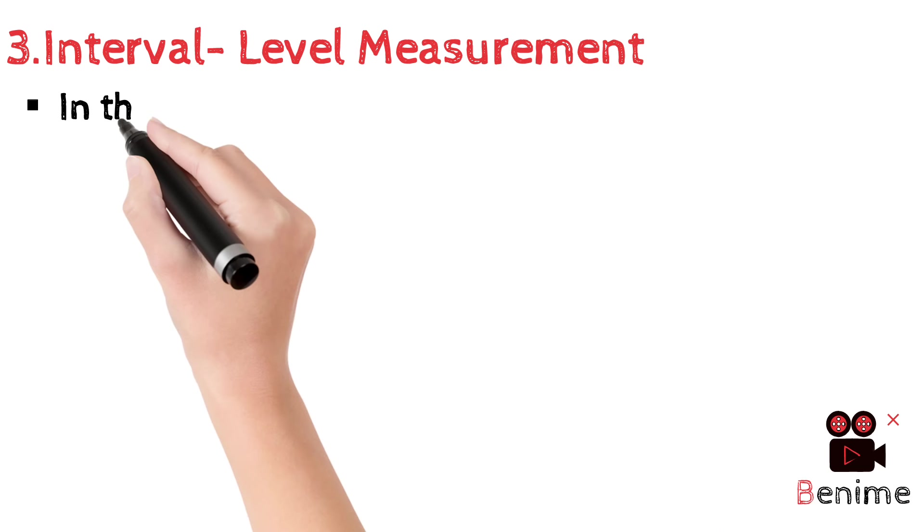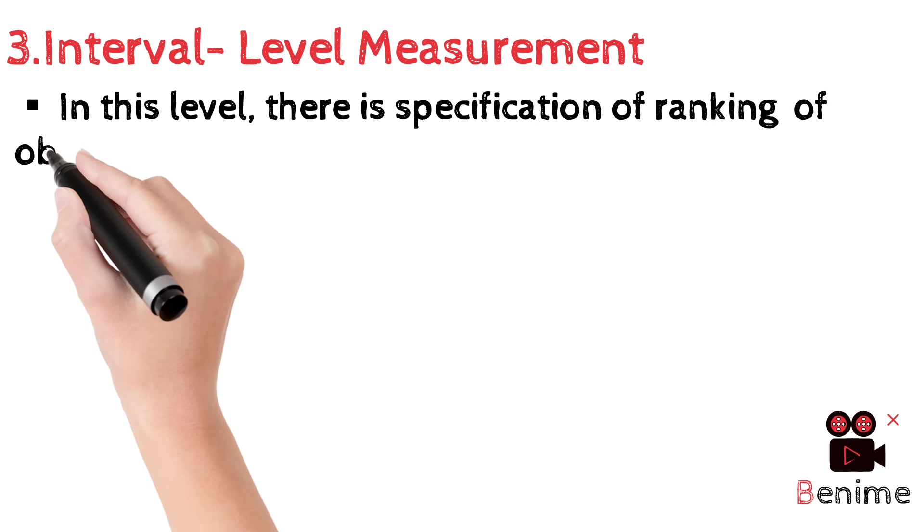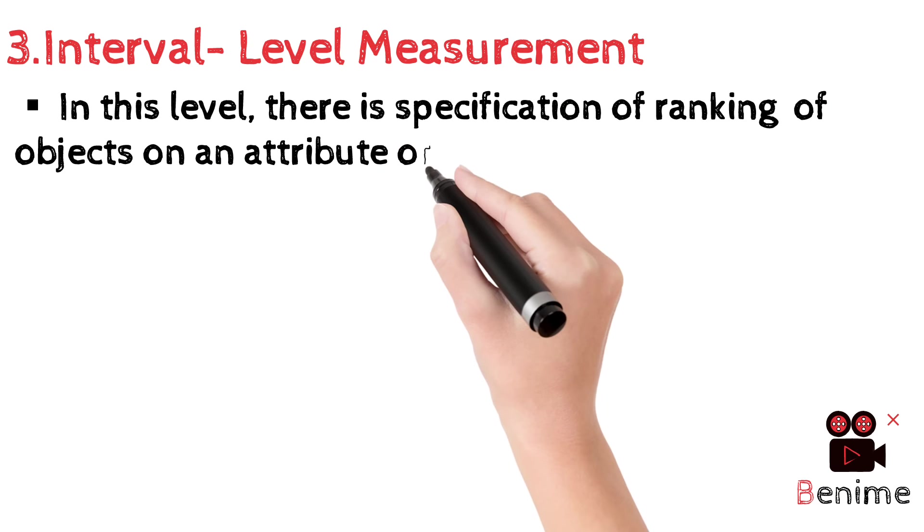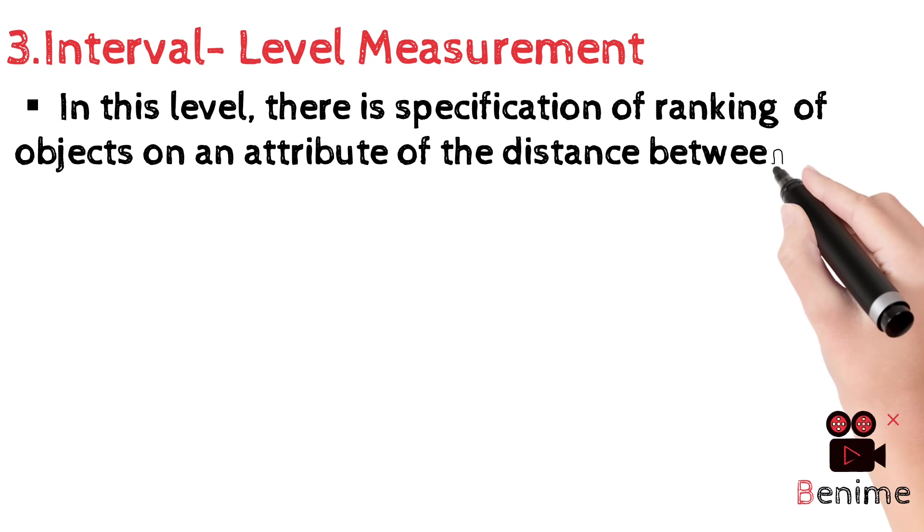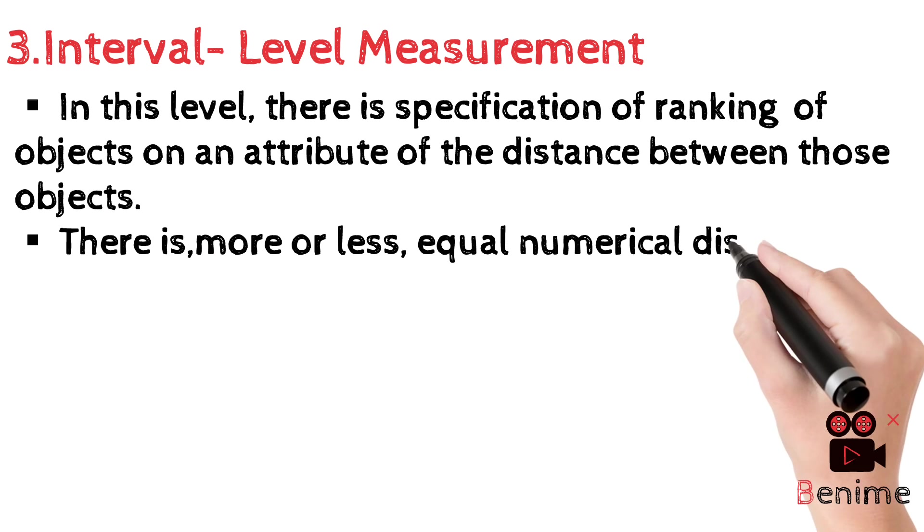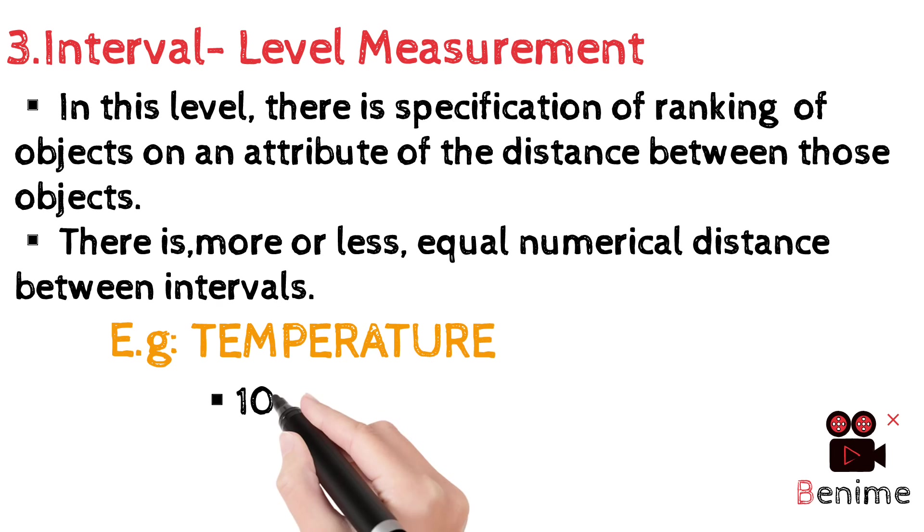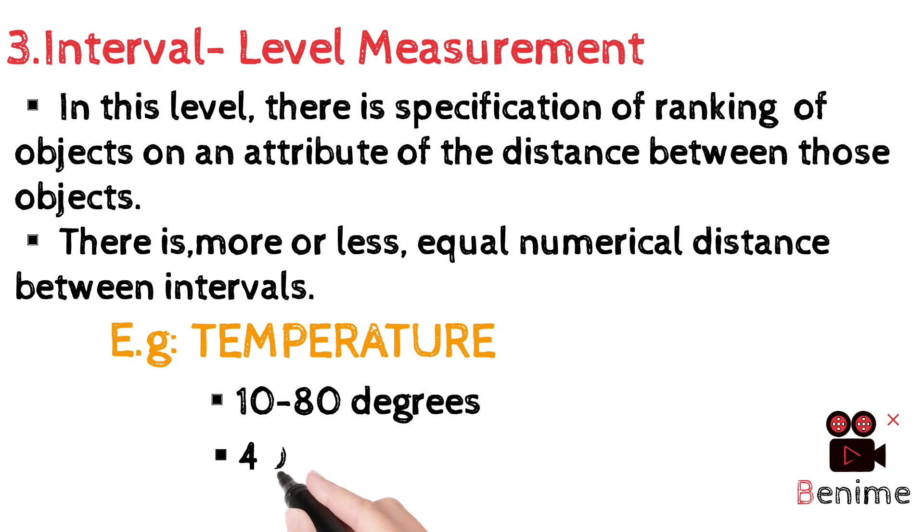Next we move on to interval level measurement. There is a specification of ranking of objects on an attribute and the distance between those objects. There is more or less equal numerical distance between intervals. Example, temperature. 10 to 80 degrees or 40 to 50 degrees.